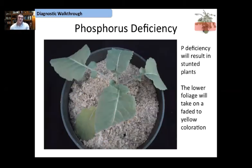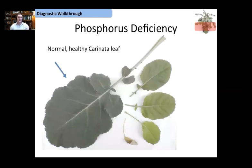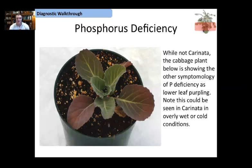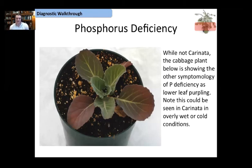Phosphorus deficiency manifests in the lower portion of the leaves as a yellow coloration, slightly olive — the key is to look at the lower foliage. A normal healthy Carinata leaf compared to a progression of phosphorus deficiency shows worsening symptoms down to necrotic abscission at the most advanced stage. It's worth noting that phosphorus deficiency often manifests as purpling of the lower foliage in many crops. In Carinata, overly wet or cold conditions could also result in this purpling, so be aware — it could be phosphorus deficiency if you're seeing that.